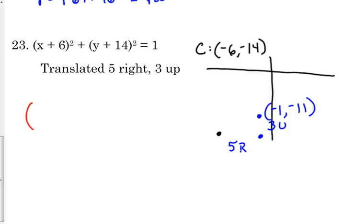So if we rewrite, if we write our new standard form equation, it's going to be what? x plus 1 squared plus y plus 11 squared. And again, we didn't change the radius. We didn't do anything to the size of the circle. We just took it and we moved it.